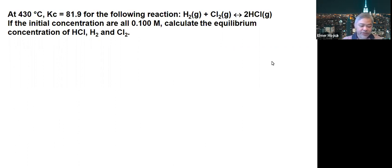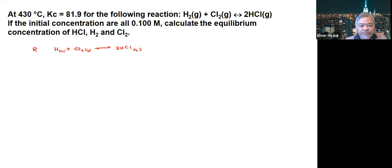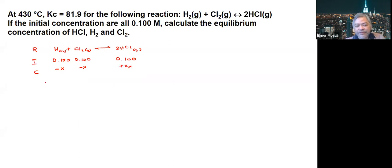We have the classic ICE problem. So we write the reaction: H2 plus Cl2 reducing to HCl. Based on the given, the initial concentration for all of them is 0.1. The changes follow the pattern: reactants minus X, products plus 2X. So at equilibrium we have 0.1 minus X, 0.1 minus X, and 0.1 plus 2X.